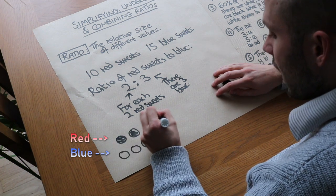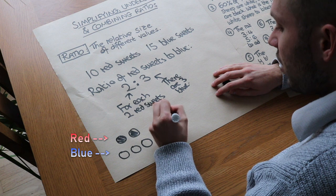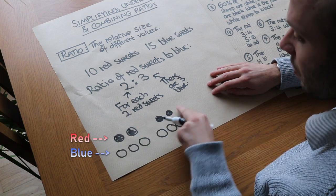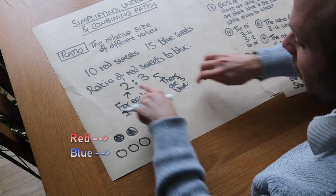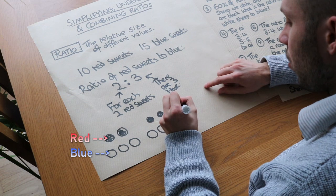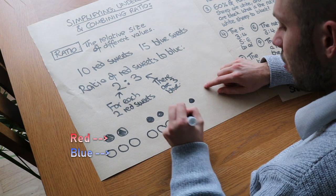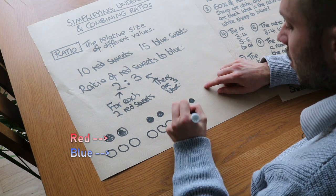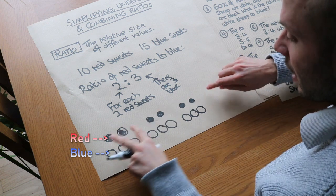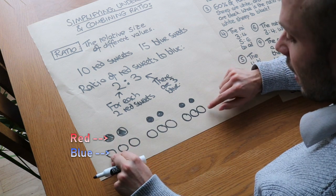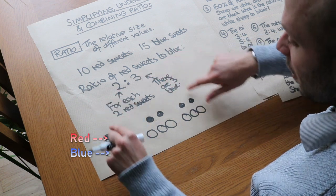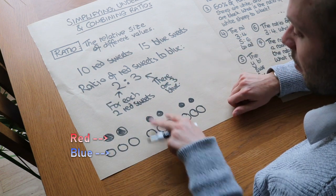So let's just say that we have two red sweets and three blue sweets — I'm going to make my blue sweets just clear circles because I don't have coloured pens. For each two red, I have three blue. So if I had another two red, for each two red I have three blue, it could be that I have four red sweets and six blue sweets. I've managed to double each of these.